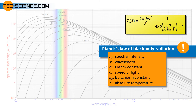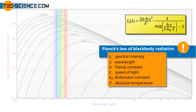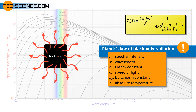Planck could derive the following formula for the distribution of the spectral intensity as a function of wavelength. This formula is also known as Planck's law. Intensity means the radiant power of the blackbody emitted per unit area — in the physical sense, a surface power density. If the intensity is related to the wavelength interval within which the power is emitted, this is called spectral intensity.